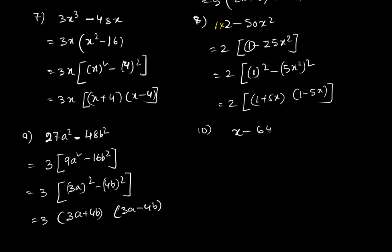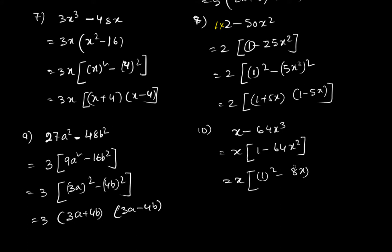Question 10 is x - 64x³. We take x out, leaving 1 - 64x², which we write as 1² - (8x)². Applying the formula gives x(1 + 8x)(1 - 8x).